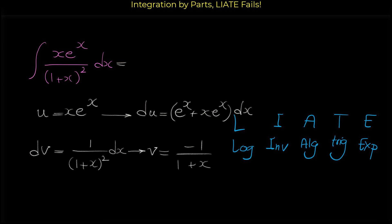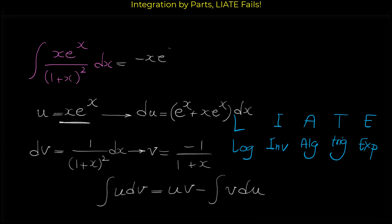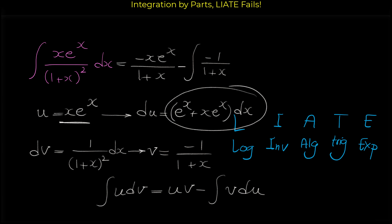Based on the integration by parts formula — integral of u dv equals uv minus integral of v du — u is x e to the x and v is negative 1 over 1 plus x. So we have u times v, then minus the integral of v times du, where du is e to the x plus x e to the x dx.